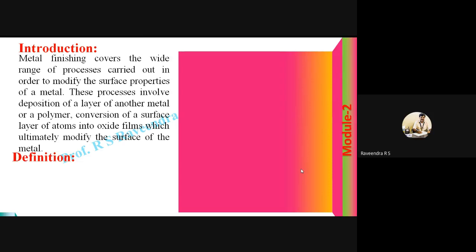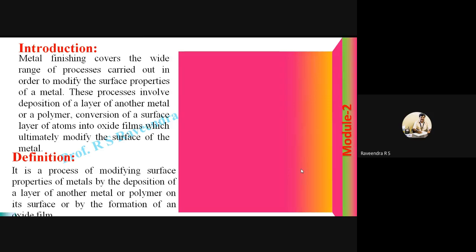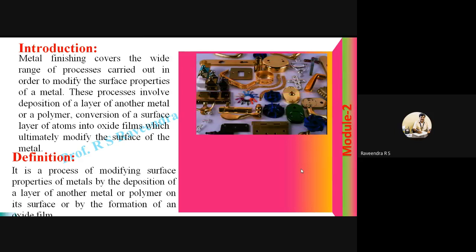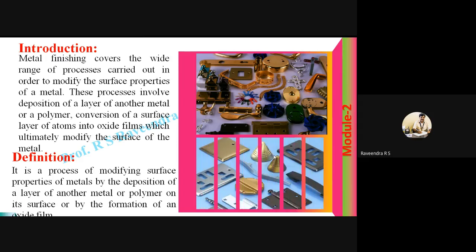Let us try to give the definition of Metal Finishing. It can be defined as the process of modifying surface properties of metals by the deposition of a layer of another metal or a polymer on its surface, or by the formation of an oxide film. We can see in this image the various types of metallic articles with modified shining nature and surface properties, showing how these metal articles look after surface modification.